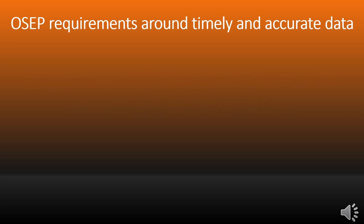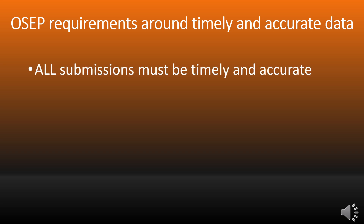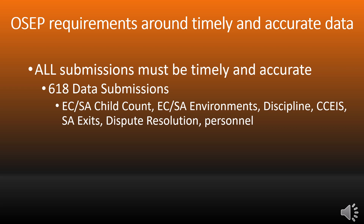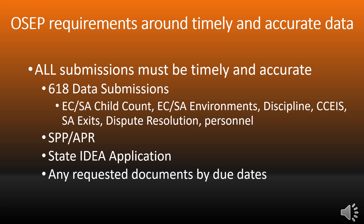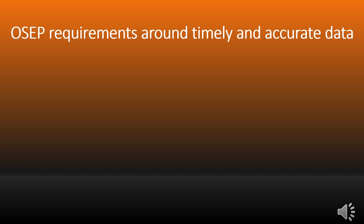The Office of Special Education Programs at the U.S. Department of Education, also known as OSEP, has a regulatory requirement to ensure all submissions are timely and accurate. All submissions include the 618 data submissions, such as early childhood and school-age child count, early childhood and school-age environments, discipline, coordinated early intervening services, comprehensive coordinated early intervening services, school-age exits, dispute resolution, and personnel, as well as the State Performance Plan and Annual Performance Report, the State's IDEA application, and any requested documents by the due dates.